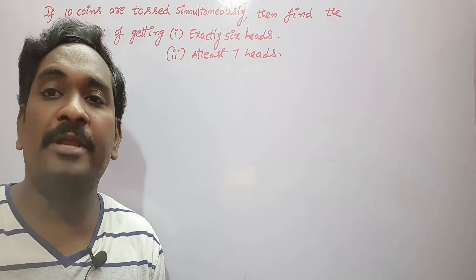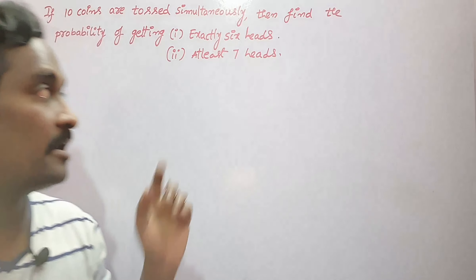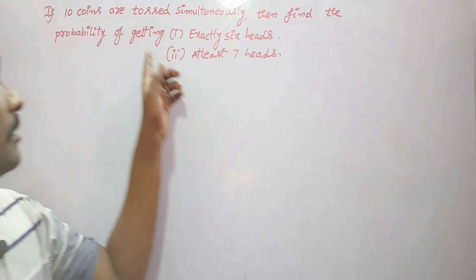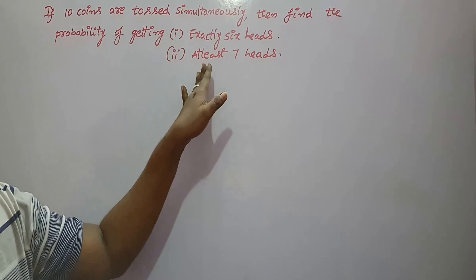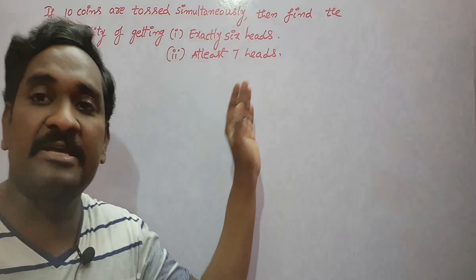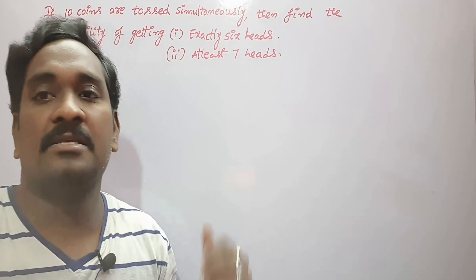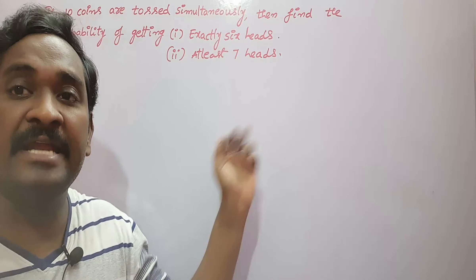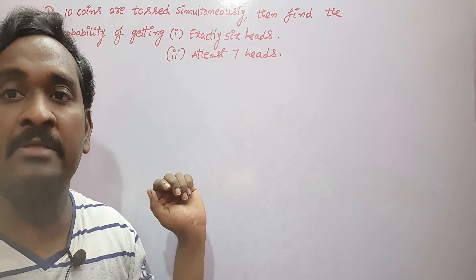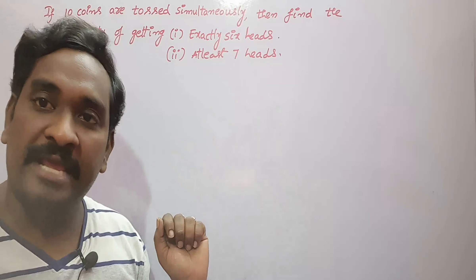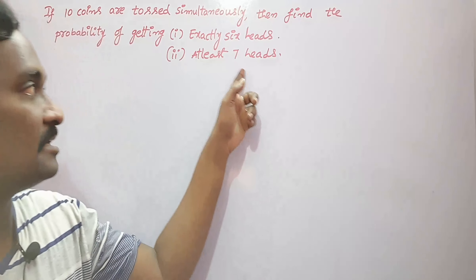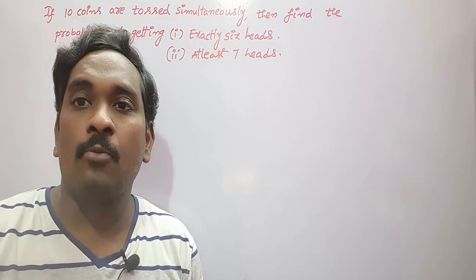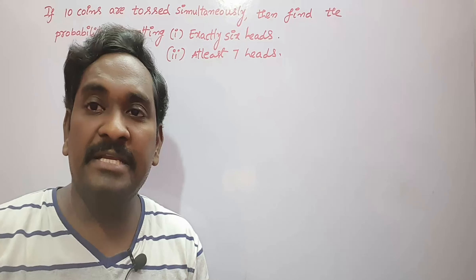If you are tossing 10 coins at a time, what is the probability of getting exactly 6 heads? The remaining 4 coins should show tails only. The second part: what is the probability of getting at least 7 heads? At least 7 heads means you may get a minimum of 7, 8, 9, or all 10 heads. To solve this type of problem, we cannot apply the basic classical definition of probability.